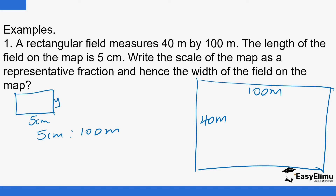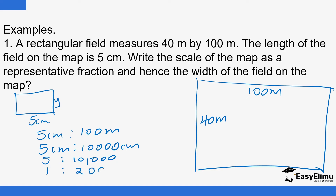What we have is 5 centimeters. You convert 100 meters to centimeters by multiplying by 100, so that becomes 10,000 centimeters. You then drop the units so you have 5 to 10,000. You can subdivide this further so that you have 1 to 2,000. That is the ratio — the ratio of measurements on the map compared to measurements on the actual ground. This can also be written as 1/2000, which is the representative fraction.